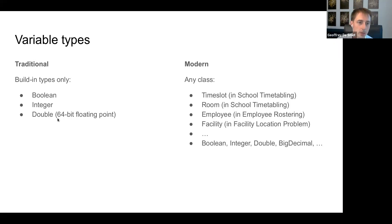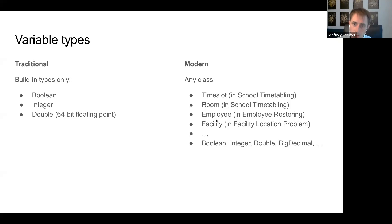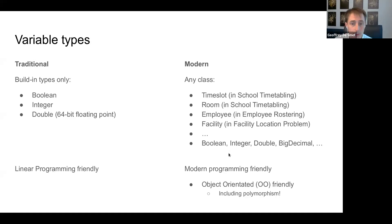In a modern approach, you can define your own variable type. You can say: I have a time slot — I'm going to assign lessons to time slots, not to integers. I have a lesson — I'm going to assign it to rooms. For shift rostering you assign shifts to employees. You can still use booleans, integers, doubles, and even BigDecimals, but for most constraint-solving cases you usually won't need them.